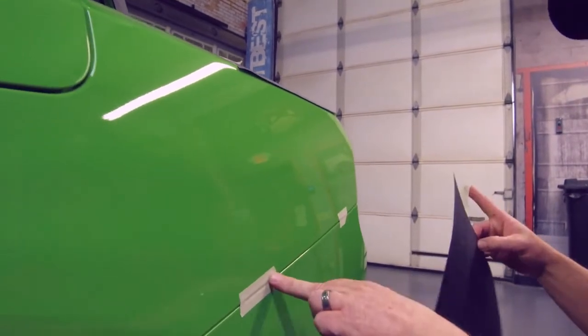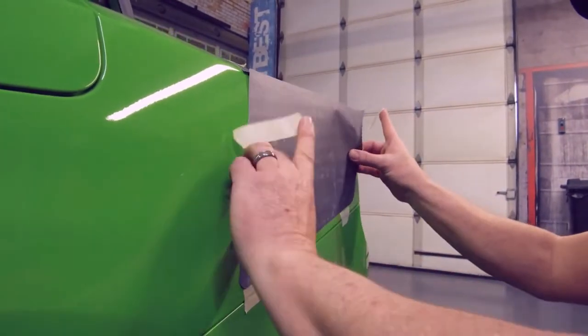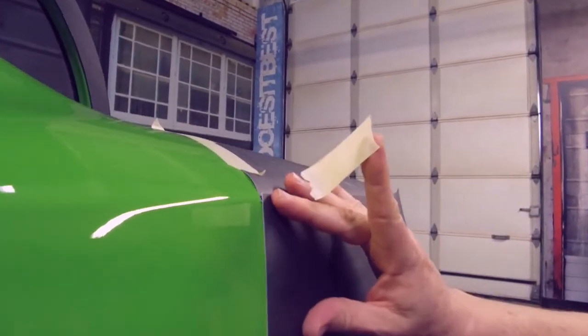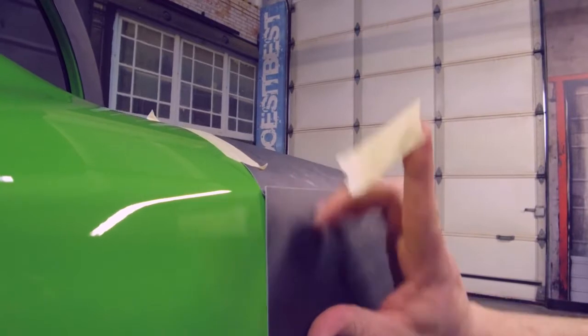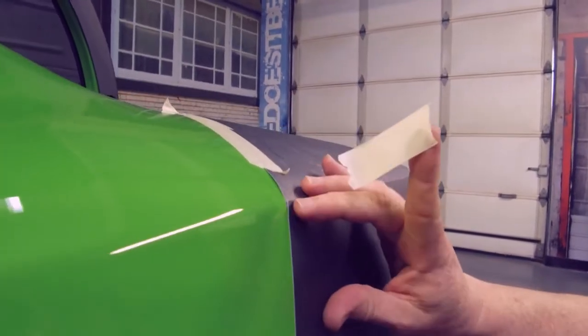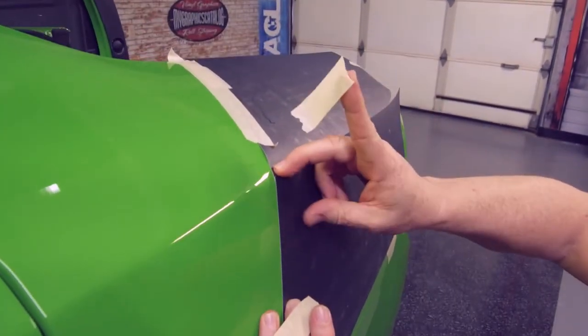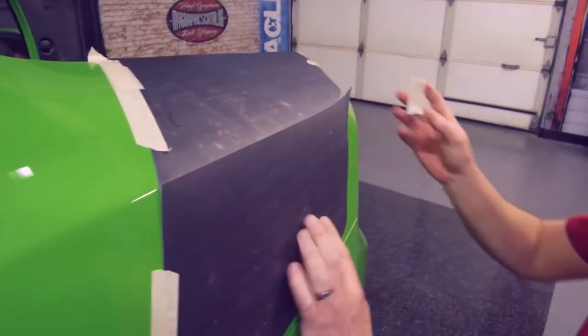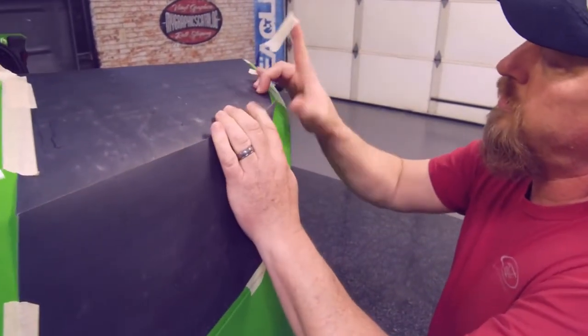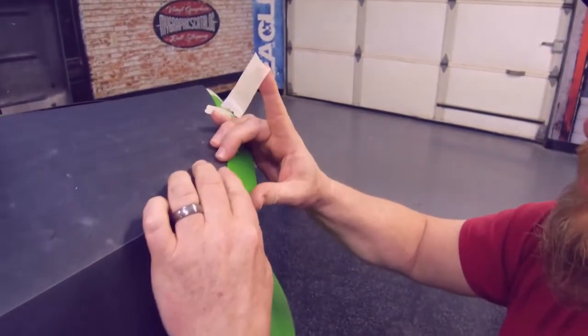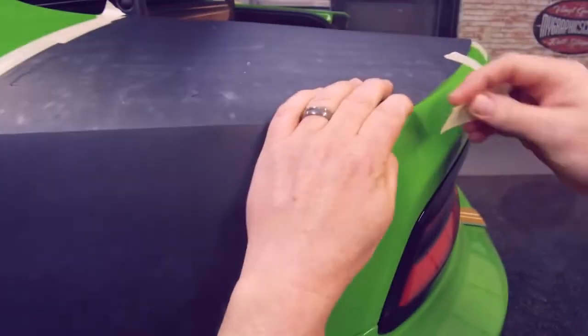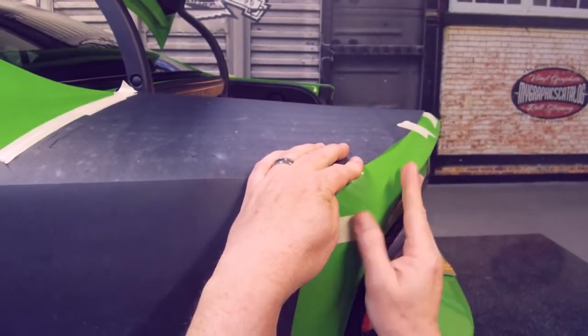We're about a half inch up off the body line here and you can see that my pieces are going to overlap like so. What you want to do is line this up, tape that in place, come around here and lay this piece down to where you see where it's going to line up there and tape that in place.